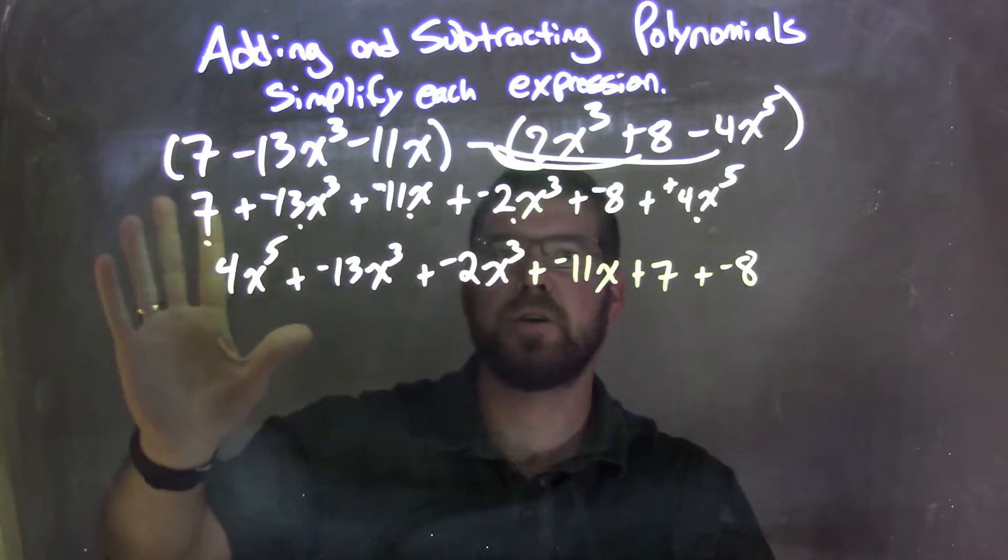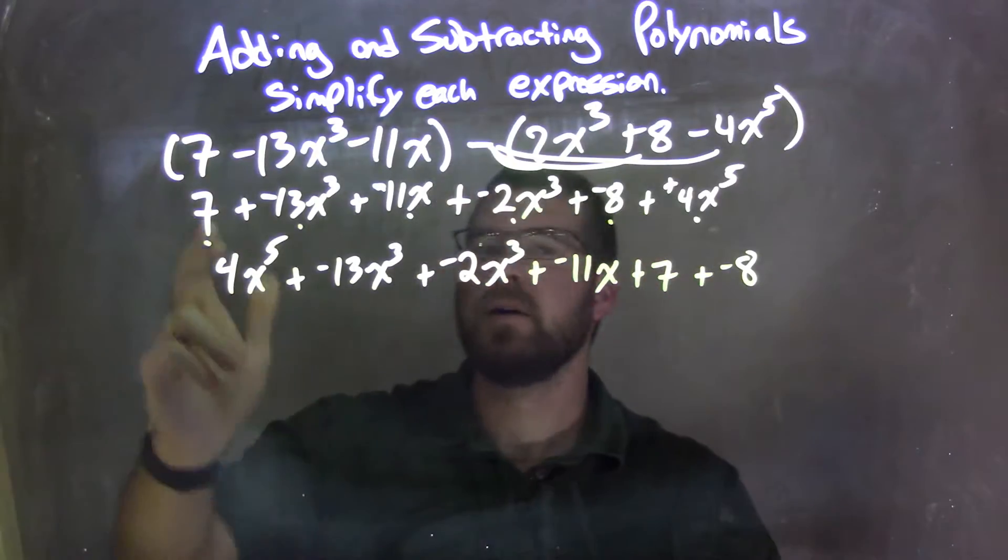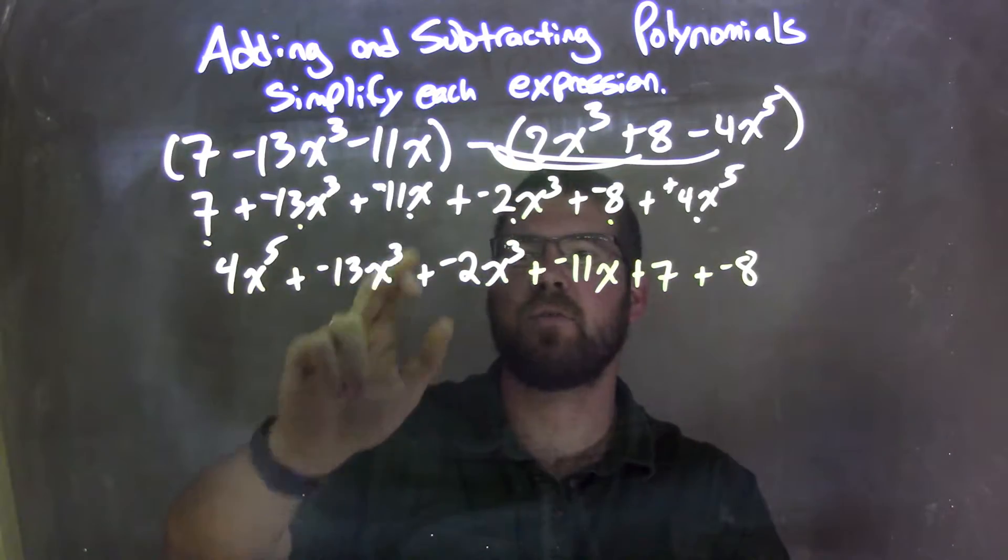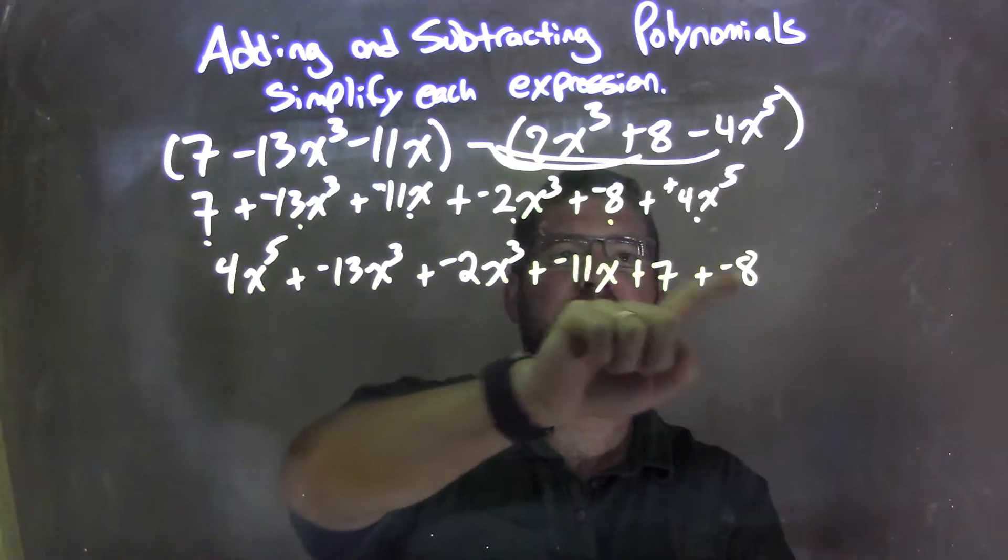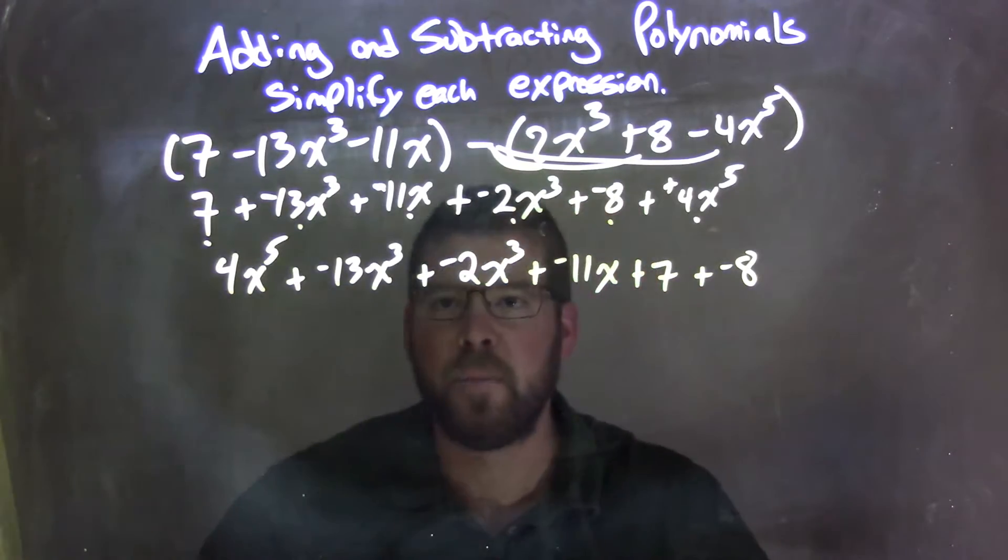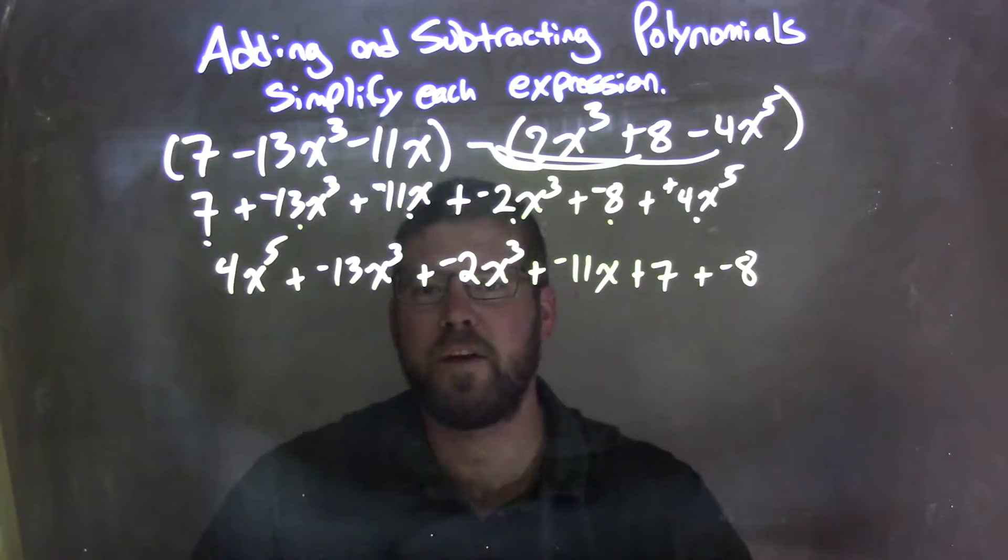Double check. The dots went down. Just making sure here. 7 right there. Negative 13x. Negative 11x. Negative 2x to the 3rd. Negative 8. And 4x to the 5th. Got them all. Didn't forget anything. No one was left behind.